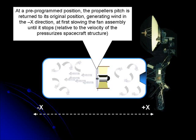At a pre-programmed position, the propeller pitch is returned to its original position, generating wind in the minus X direction, at first slowing the fan assembly until it stops relative to the velocity of the pressurized spacecraft structure.